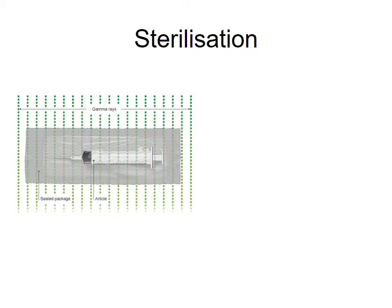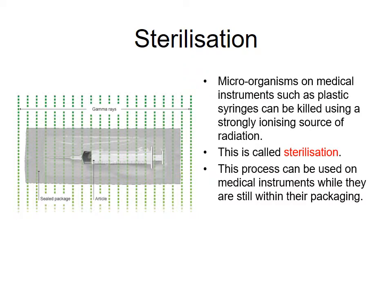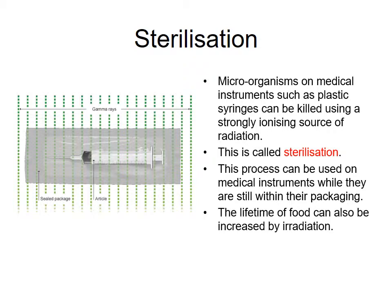Another technique in medicine where gamma radiation is used is sterilization. There are microorganisms all over our medical instruments, and the most effective way to kill them is through sterilization with gamma radiation. That way you can kill the bacteria while they're still in the packaging, so you don't have to open up the syringe, for example, and expose it to other bacteria. The lifetime of food can also be increased by the same process, because you're killing the bacteria inside the food.